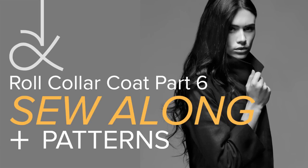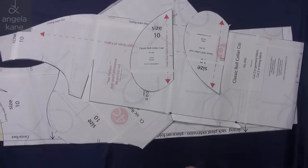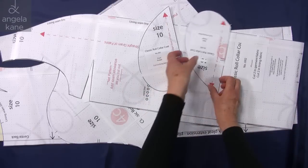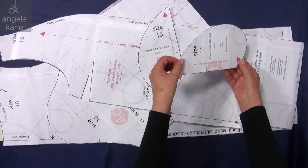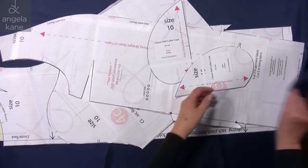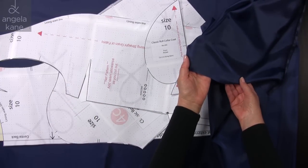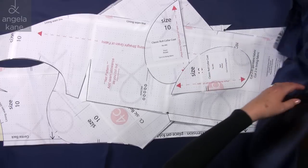Making the classic roll collar coat, Part 6: Cutting out the lining and interfacing. We are using most of the pieces used for our main fabric plus of course our pocket bag. This is standard quality lining and is 56 inches or 140 centimeters wide.